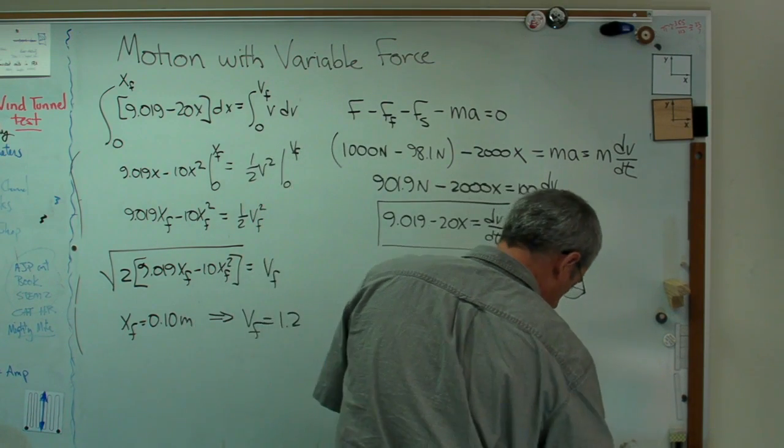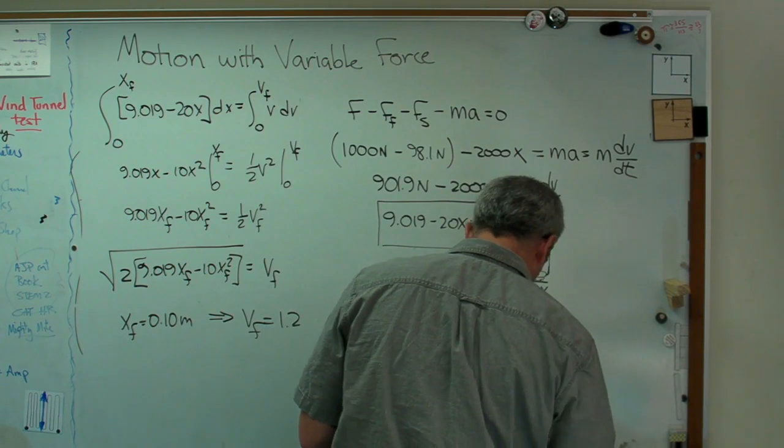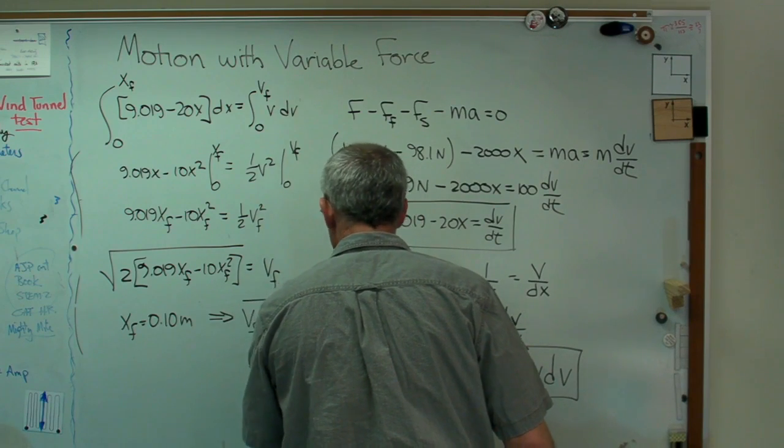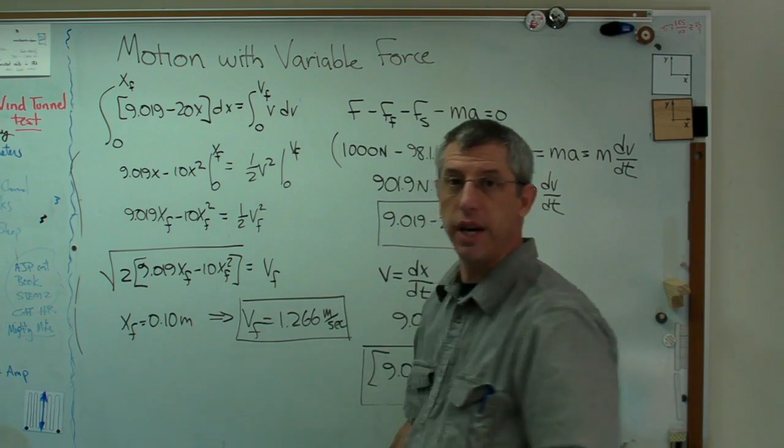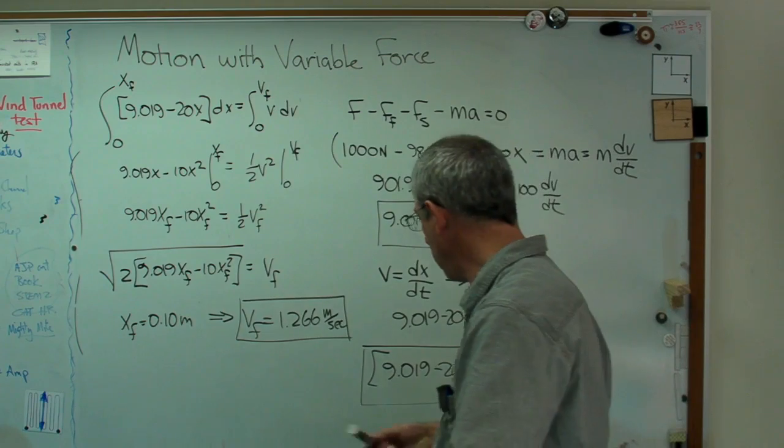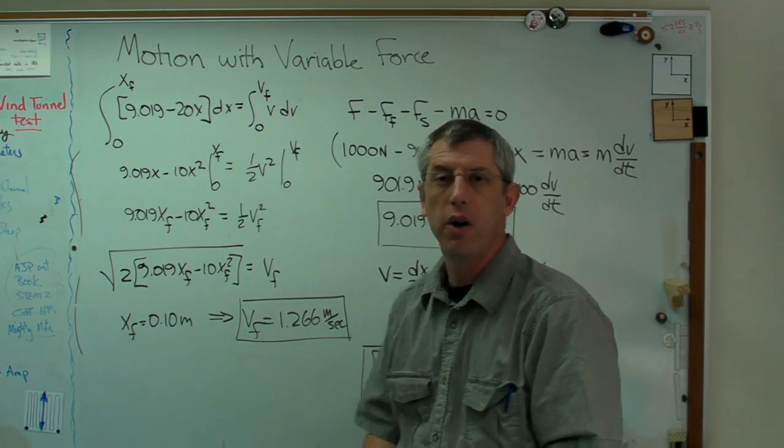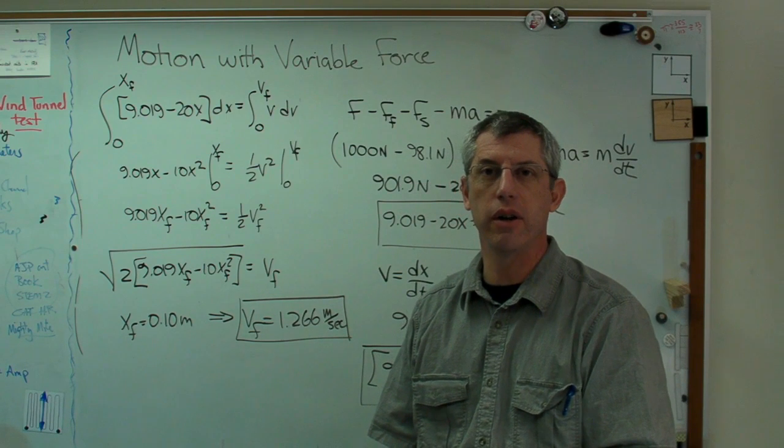I'm going to get v final equals 1.2, let's make sure I get the right answer here, 1.266 meters per second. So there you go, guys. This is how to do this problem and this is how you do a whole class of problems that act the same way. I hope this helps. I hope you get all A's on your exams.